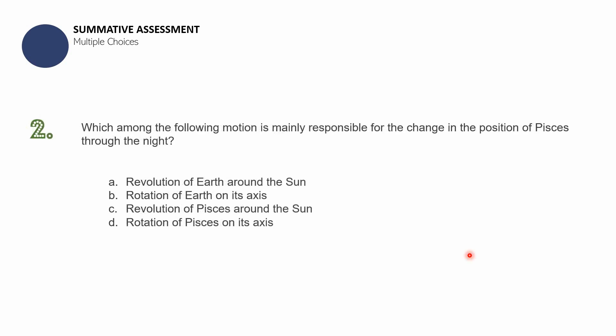Question number two: which among the following motions is mainly responsible for the change in the position of Pisces throughout the night? Pisces is a constellation and also a zodiac sign — the fish. A — revolution of Earth around the Sun; B — rotation of Earth on its axis; C — revolution of Pisces around the Sun; or D — rotation of Pisces on its axis?